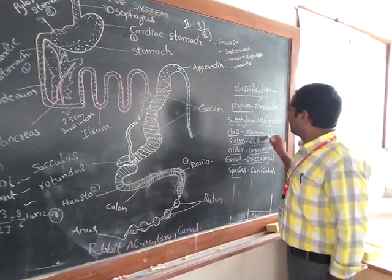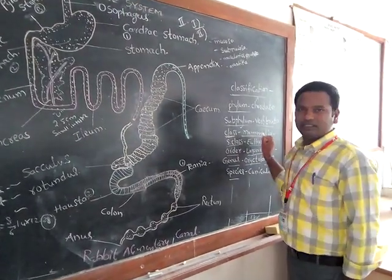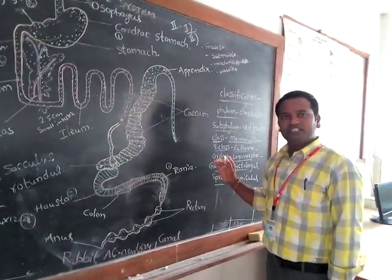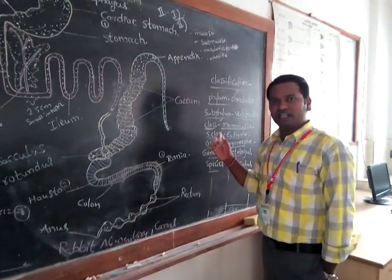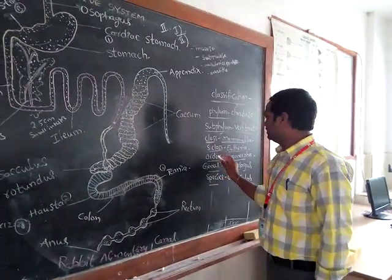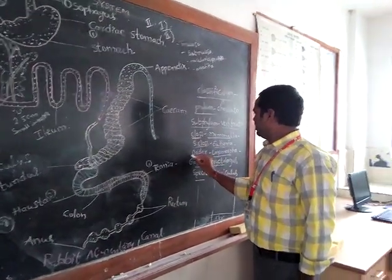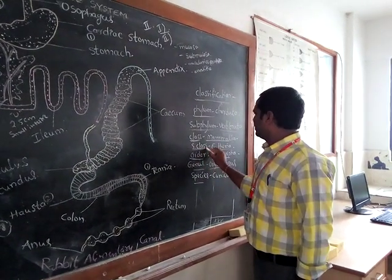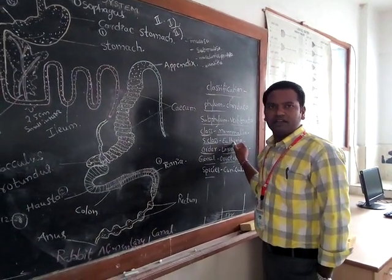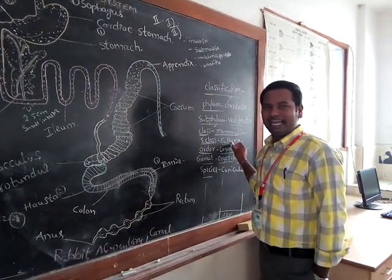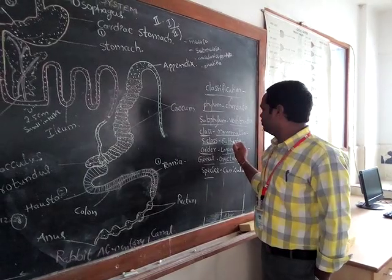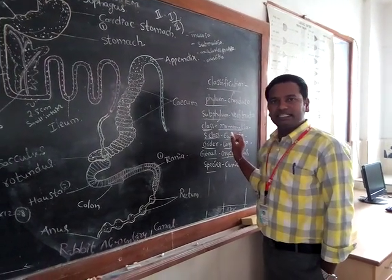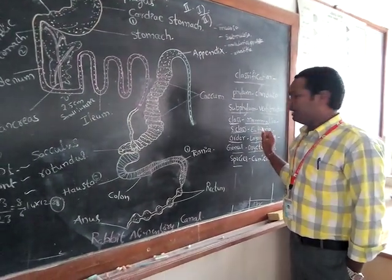Class: Mammalia. Mammalia means that the organisms feed on mother's milk. Subclass: Eutheria. Eutheria means 'true beasts' — these are placental animals.